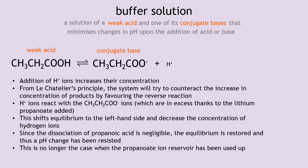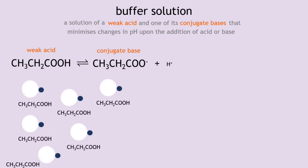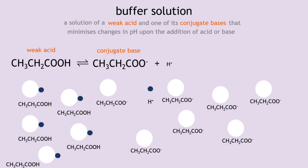Now, what about bases? If we add an alkali — OH⁻ ions — what happens? Here we have our propanoic acid; some of it will dissociate. We also have our propanoate ions. When an OH⁻ ion is added, one of two things can happen. In the first case, if we've only added a very small amount of base, giving very few hydroxide ions, they might react with the hydrogen ions that formed as a result of the dissociation of propanoic acid.